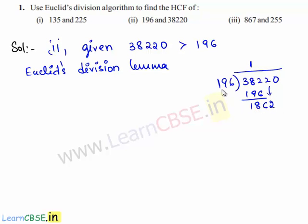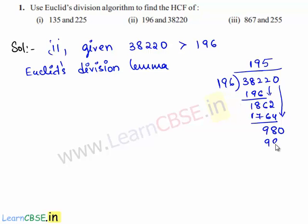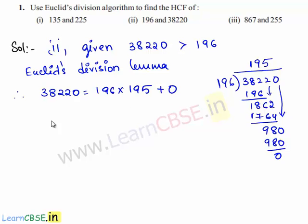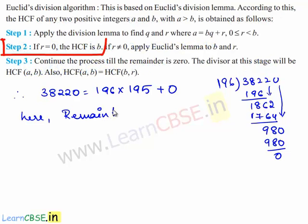We bring down 2. 196 goes into 1862 nine times, so 196 times 9 is 1764 and the remainder is 98. We bring down 0. 196 goes into 980 exactly 5 times, so 196 times 5 is 980 and the remainder is 0. Therefore, 38,220 can be written as 196 times 195 plus 0.